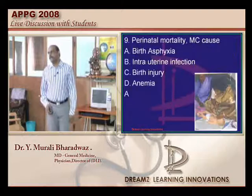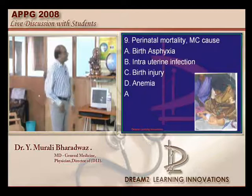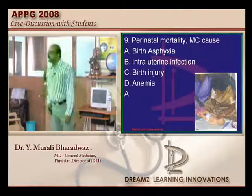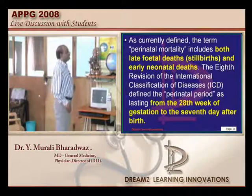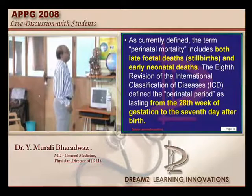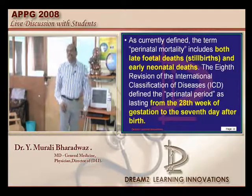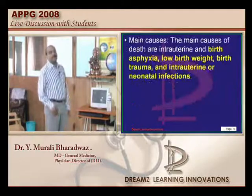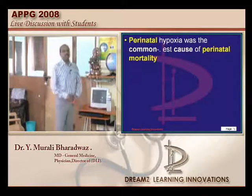Regarding perinatal mortality - the most common cause is birth asphyxia. Late fetal deaths and early neonatal deaths combined are called perinatal mortality. About two-thirds of all perinatal deaths occur in children who are less than 2500 grams birth weight, and birth asphyxia or perinatal hypoxia is the most common cause.